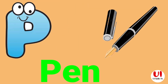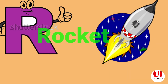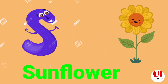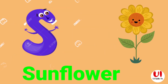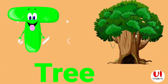P for pen. Q for queen. R for rocket. S for sunflower. T for tree.